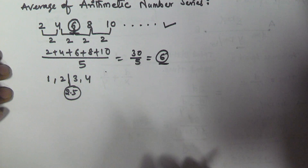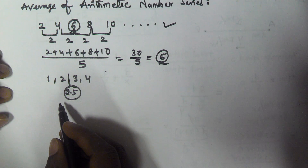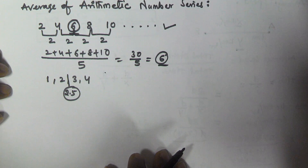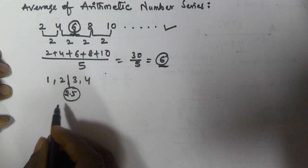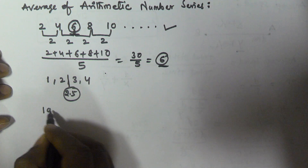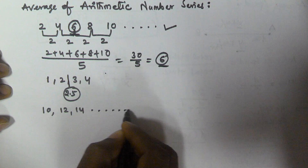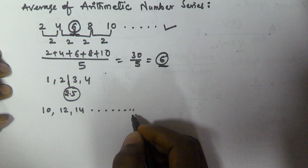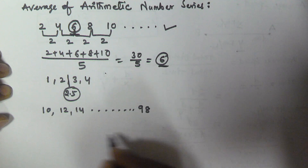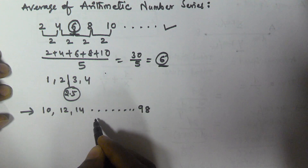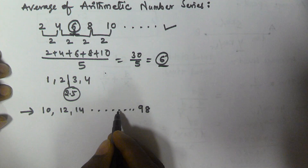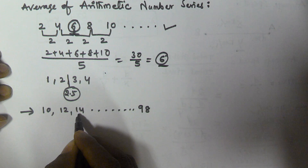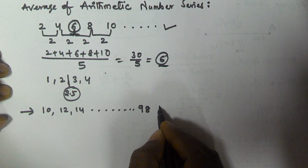Now let us find the average of all the two-digit numbers which are divisible by 2. The two-digit numbers start from 10: 10, 12, 14, and so on. The last two-digit number divisible by 2 is 98. In this case, it is very difficult to find the middle number. But this series is an arithmetic series, because the difference between consecutive terms is 2 — from 12 to 14 is 2, and so on.